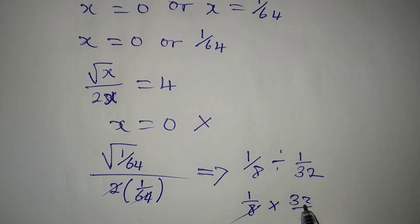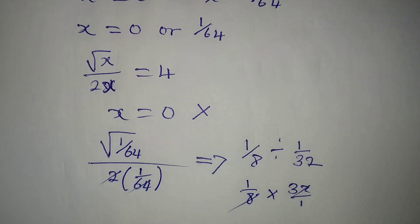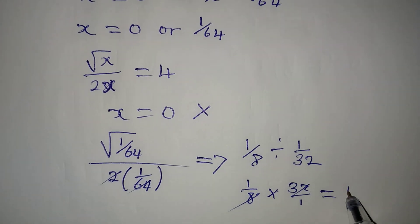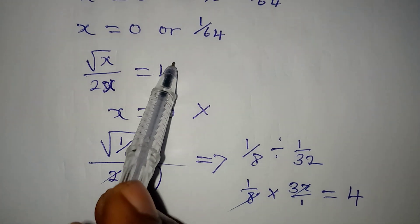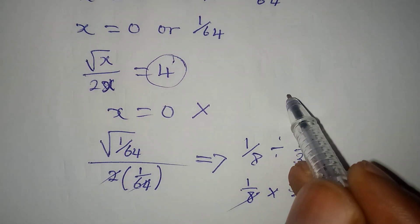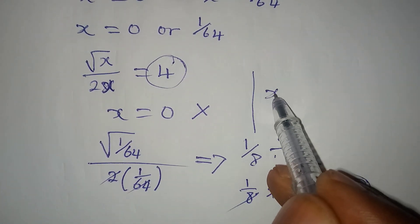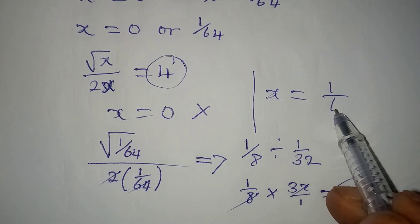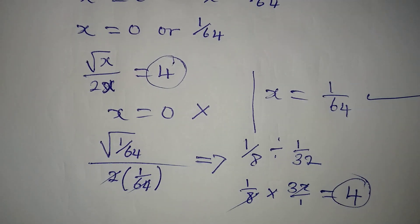8 will go there 4 times, so we have everything to be equal to 4, and that is what we had on the right hand side. Thank you for watching, because it is correct that x is equal to 1 over 64.